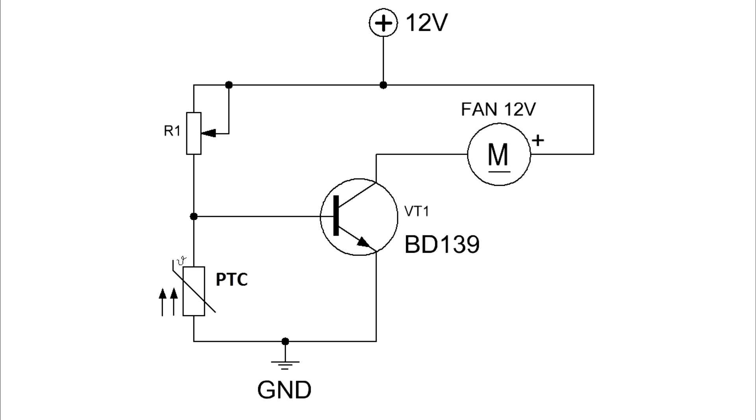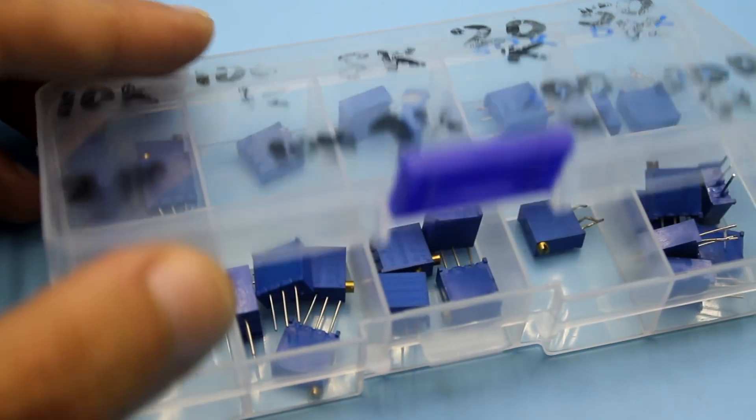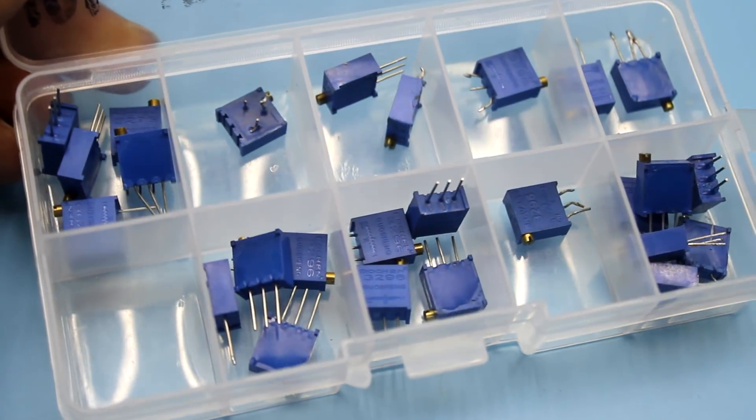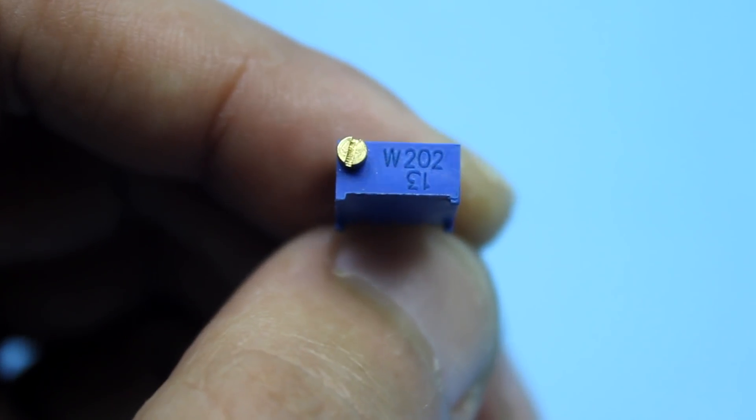The circuit will look like this in case of using a thermistor with a positive temperature coefficient. For the most accurate tuning, I highly recommend using multi-turn trimmer resistors.